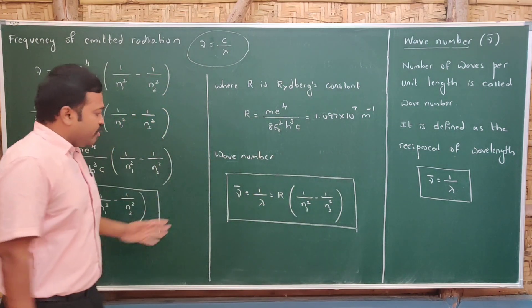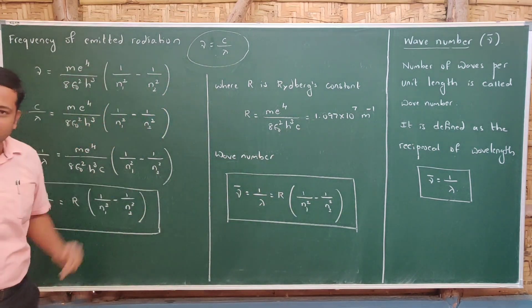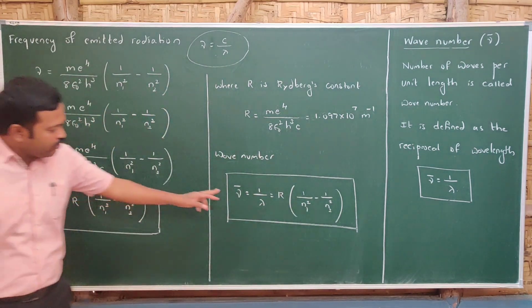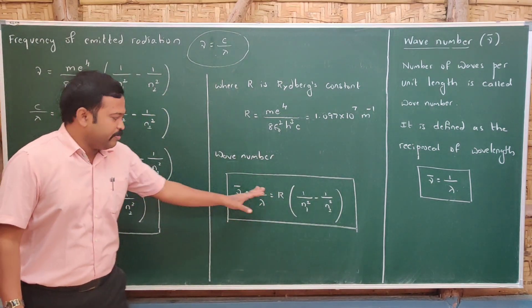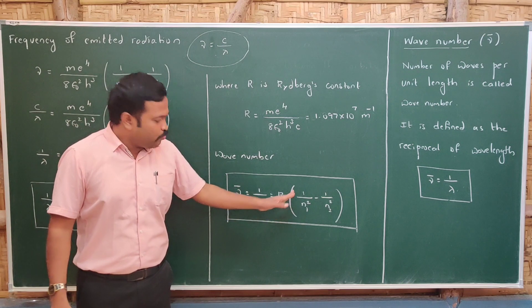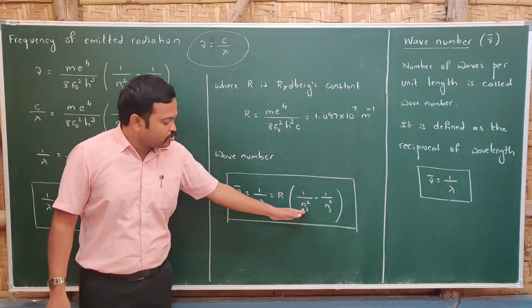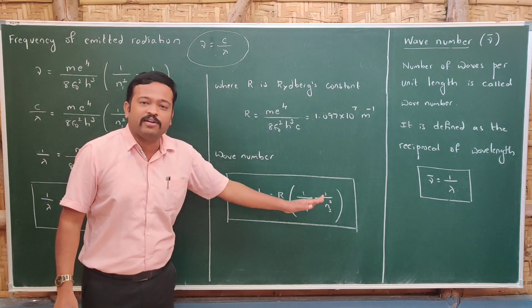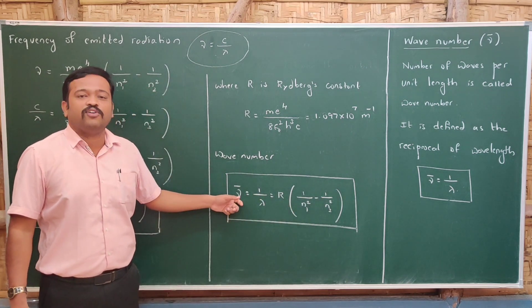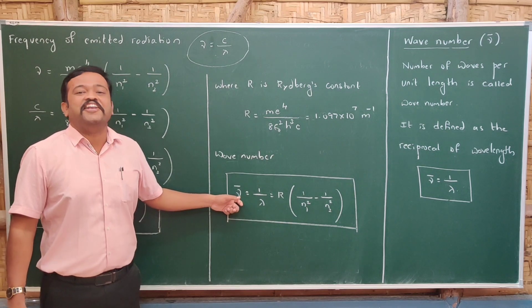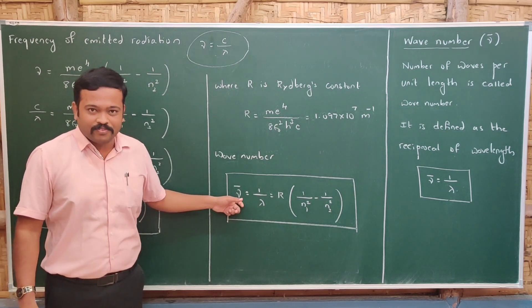Therefore the expression for wavelength is: 1/λ equals R times (1/n1² minus 1/n2²). Since wave number is the reciprocal of wavelength, the expression for wave number is the same: ν-bar equals R times (1/n1² minus 1/n2²).